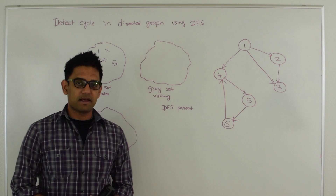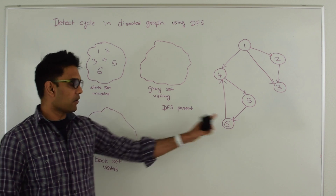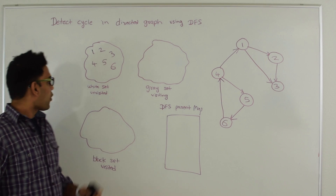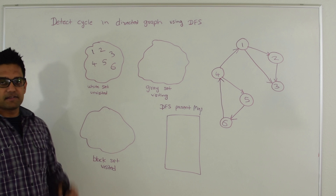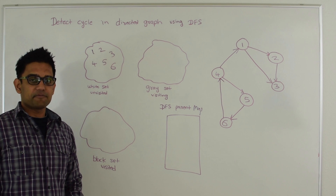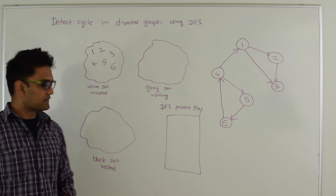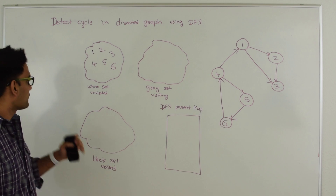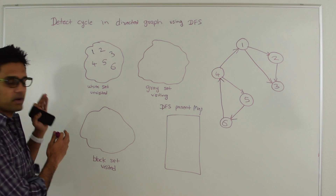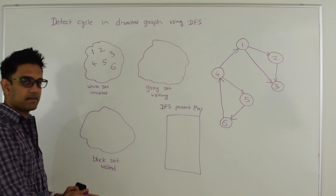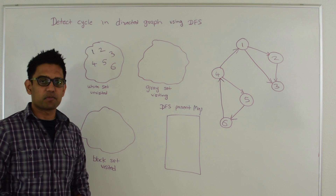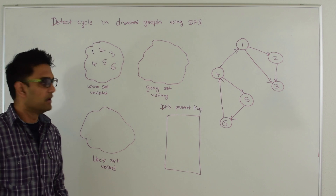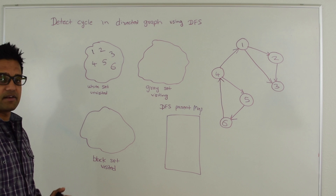Let's try to apply this algorithm on this graph. First thing we do is put all the vertices in the white set. Then we are going to continue to do depth first search until either we find a cycle in this graph or we have moved all the vertices from white set to black set. If all the vertices have been moved to black set it means that there is no cycle in this graph.